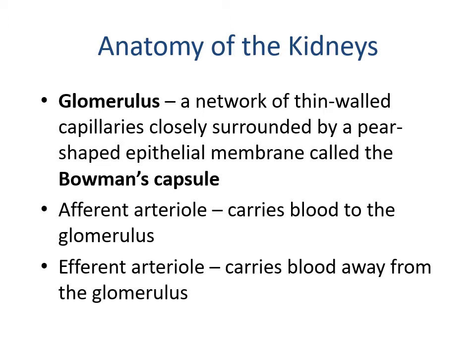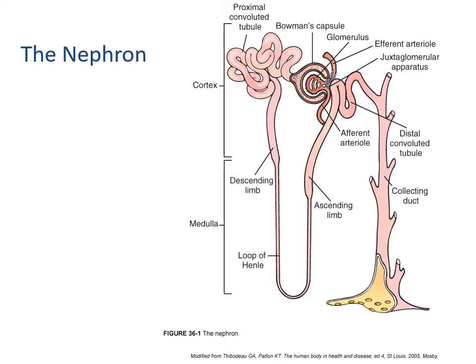The glomerulus is a network of thin-walled capillaries closely surrounded by a pear-shaped epithelial membrane called Bowman's capsule. The afferent arteriole carries blood to the glomerulus, and the efferent arteriole carries blood away from the glomerulus. An easy way to remember this is that the efferent is making its escape, or leaving the glomerulus. Looking at the nephron structure, you can see the proximal convoluted tubule, the loop at the bottom ascending, the glomerulus, the distal convoluted tubule, and finally the collecting duct.